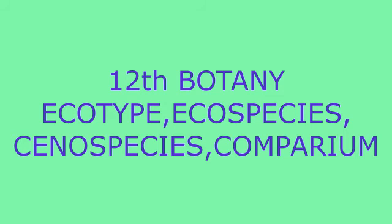To summarize: Ecotype is equivalent to Subspecies; Ecospecies is equivalent to Species; Cenospecies is equivalent to Subgenus; and Comparium — a group of one or more Cenospecies — may be considered equivalent to a Family, where there is no possibility of intercross and no genetic interchange.